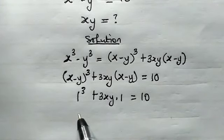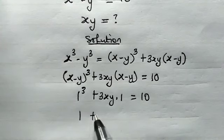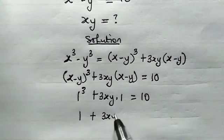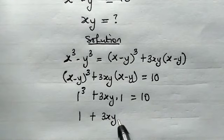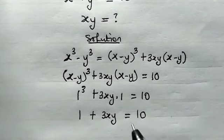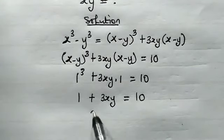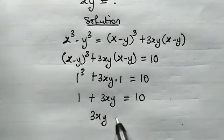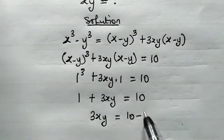So from here let's simplify this. 1 cubed is 1 plus 3x times y times 1 is 3xy, then this is equal to 10.